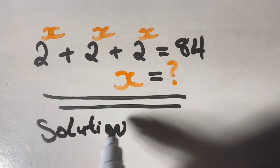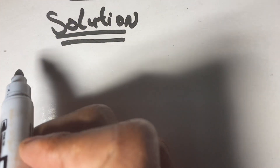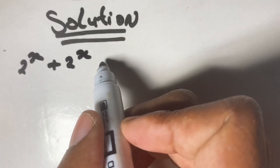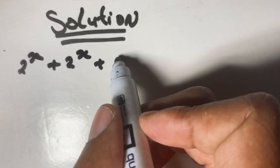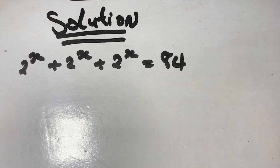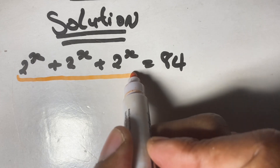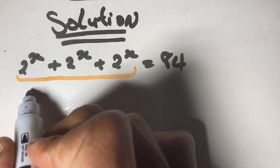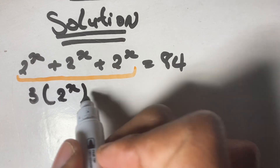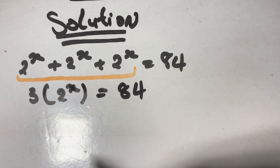So here's our solution. We are given the equation 2^x plus 2^x plus 2^x equals 84, and we are supposed to solve the value of x. We start by simplifying this expression. We can write this as 3 times the value of 2 to the power of x, and that will be set equal to 84.